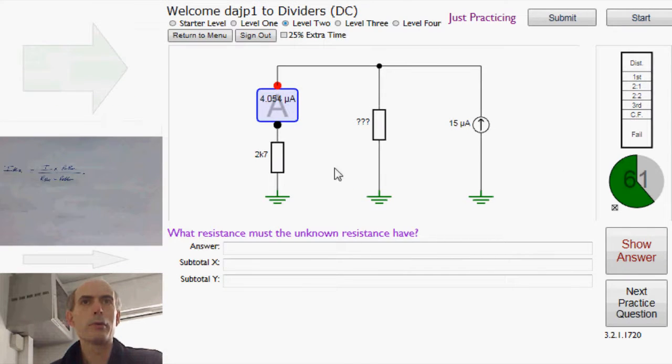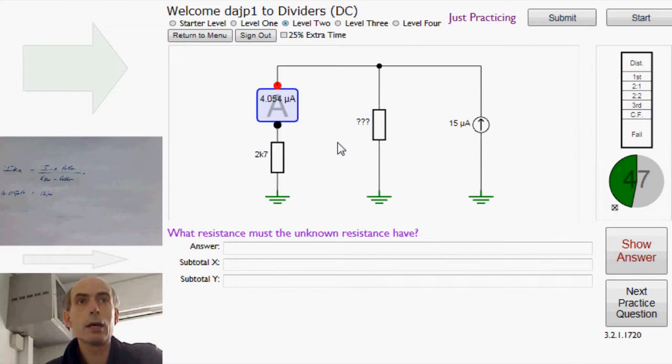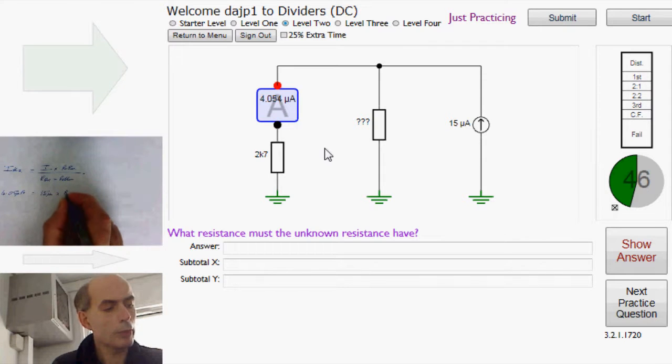So, back to the situation in hand. And the unknown thing here is R other. I this is 4.054 microamps. The total current is 15 microamps. And the resistor that we know about is 2k7. So that's times R other divided by 2k7 plus R other.